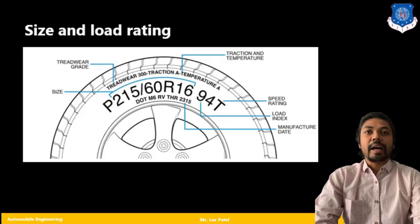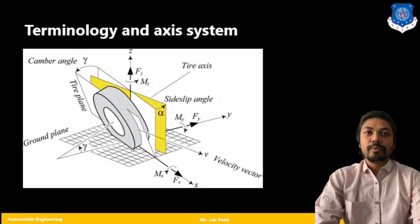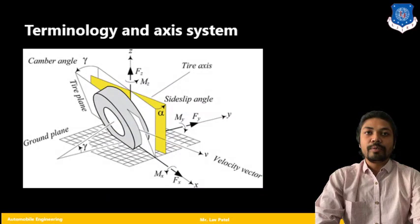Now let us move to the terminology and axis system. Here you can see one diagram in which you will find the tire is there, and also you will find tire plane. The tire plane is in between the tire.